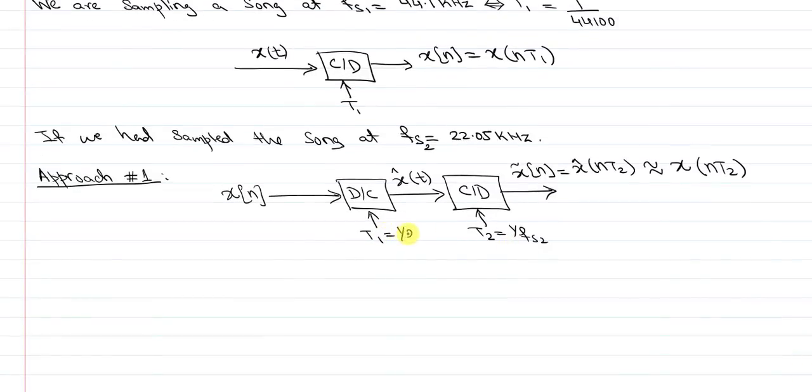So one approach of doing this sampling rate conversion is I start with the original sequence, I do reconstruction x hat of t, and I do then resampling in analog hardware. Now this approach, as you can see, is not very good. If you are using your phone, you are saying, let's first play the song, I will record it again, and then I will redo the sampling rate. You don't want to do that.